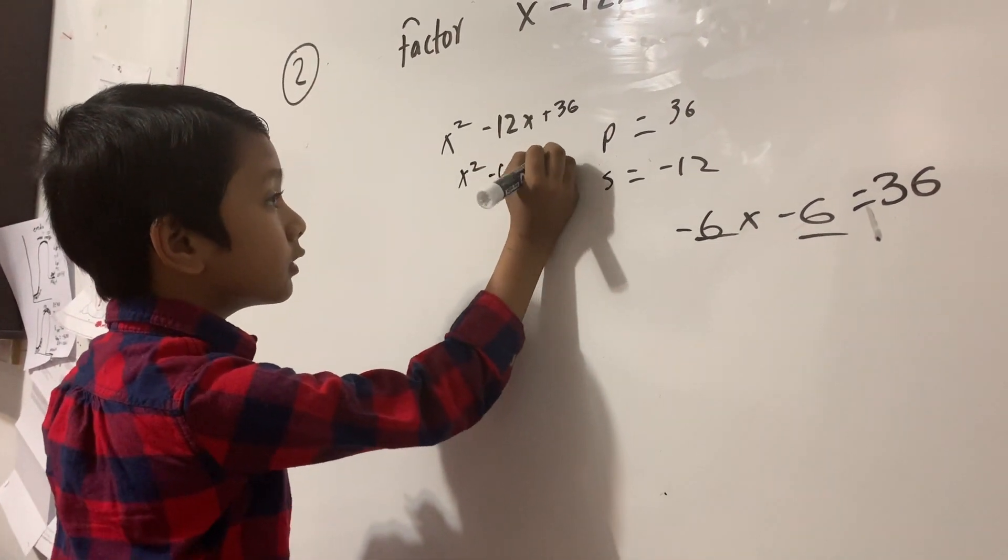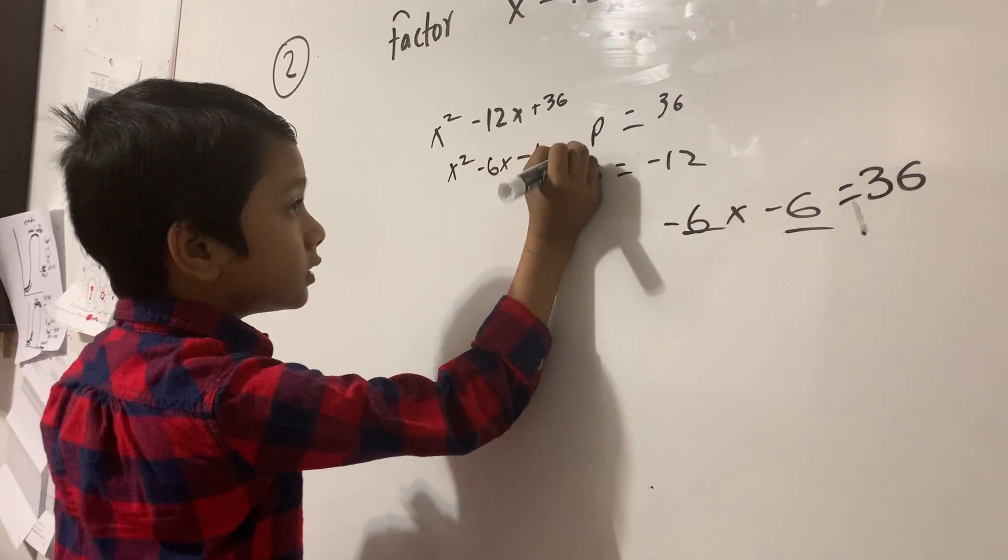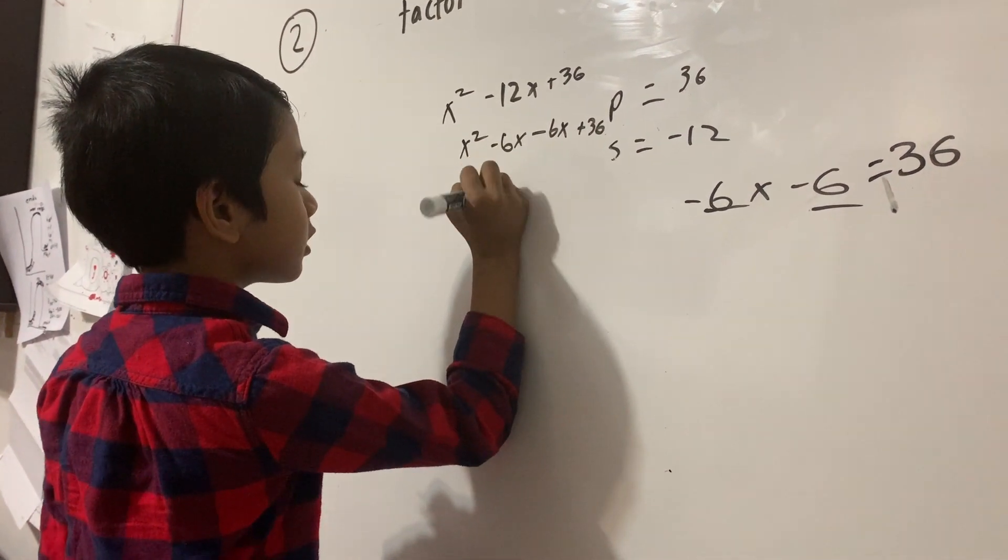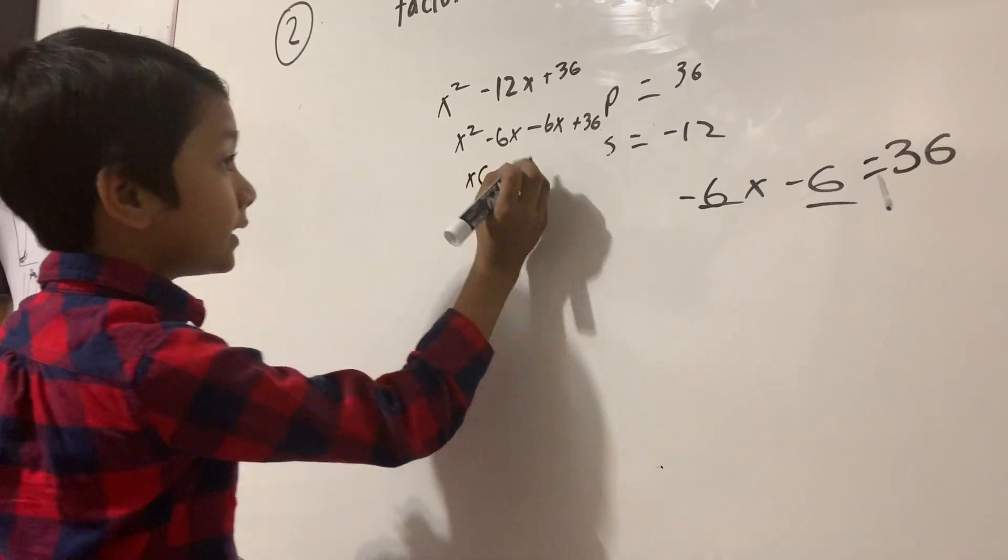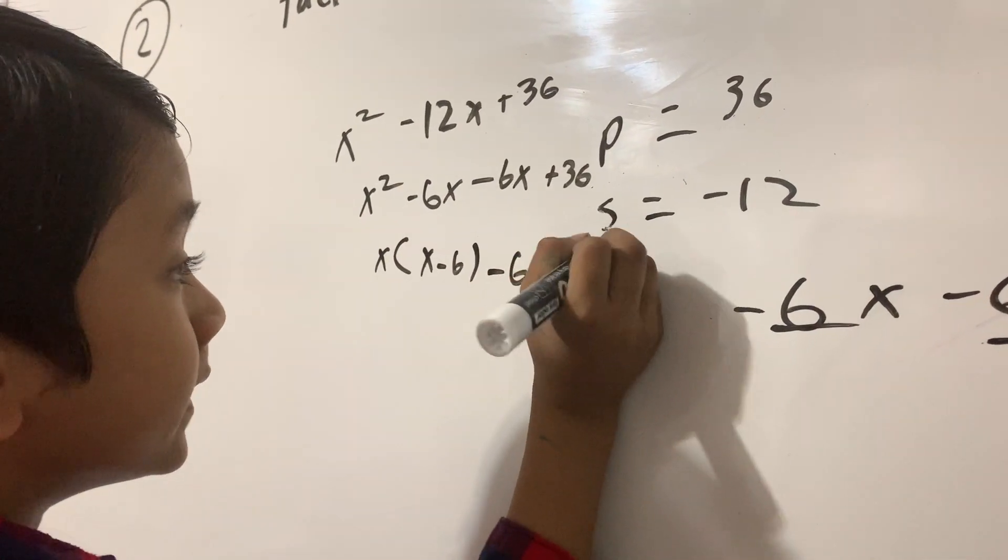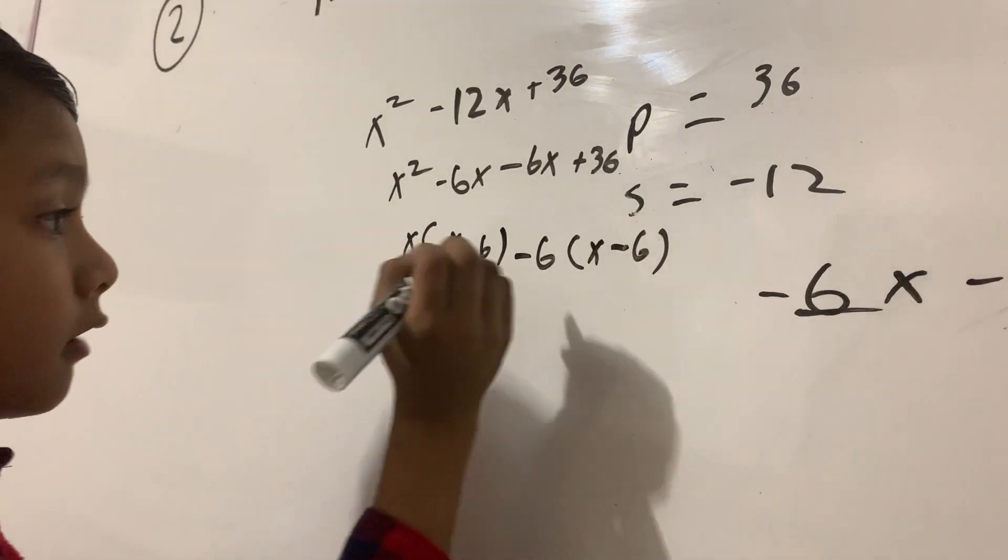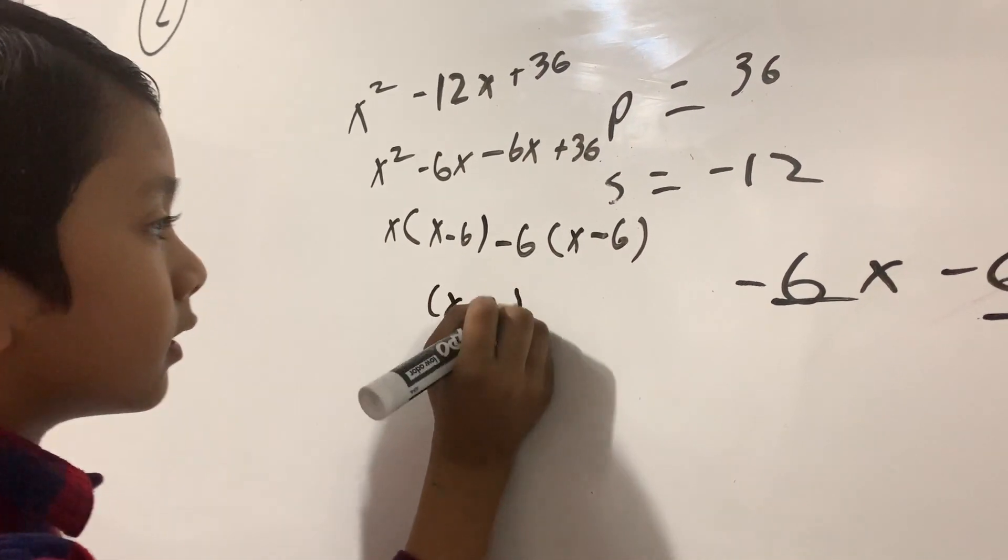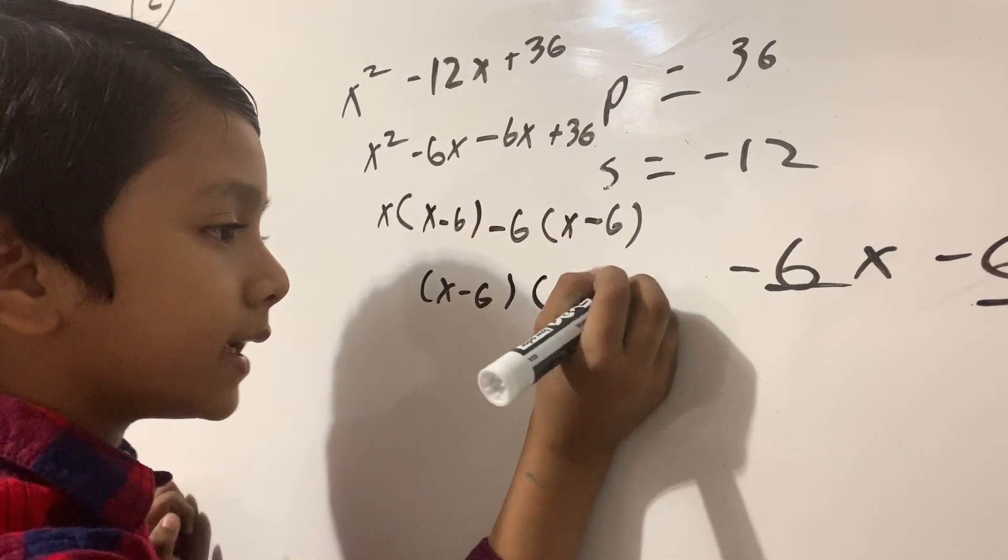So, yeah. Now we factor. So x minus 6, minus 6, that's x minus 6. Now, these two terms merge. That makes x minus 6, x minus 6.